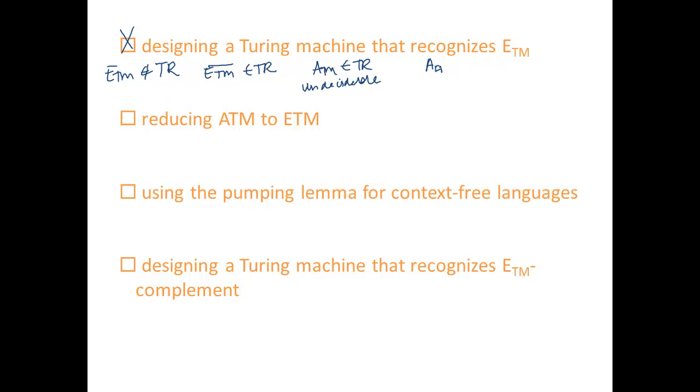A_DFA is Turing recognizable and decidable. So showing that a language is Turing recognizable does not imply anything about its decidability. If we have a recognizer for E_TM, we can't conclude that it's undecidable or that it is decidable. We could only conclude that it's Turing recognizable.